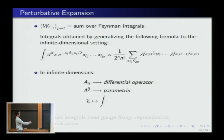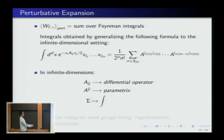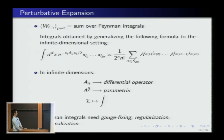In infinite dimensions, the matrix Aᵢⱼ becomes a differential operator — you have a kinetic term. Its inverse is no longer an inverse matrix but a parametrix, i.e., a Green's function or propagator, and summation becomes integration. The problem is that the product of distributions is generally not a distribution, so when you try to integrate you get the famous divergences from quantum field theory. You need to regularize, renormalize, and for gauge theories also choose a gauge-fixing procedure.